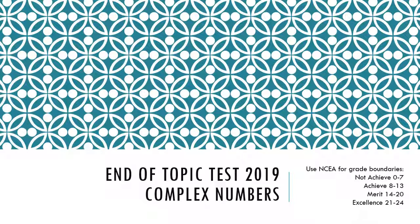Remember: mark each question overall. For example, you might get n2, a3, m5 across questions 1, 2, and 3. Add those numbers — 2 plus 3 plus 5 equals 10 points — and that fits into the grade bracket for achieved. Hope that's helpful, gentlemen. Ka kite.